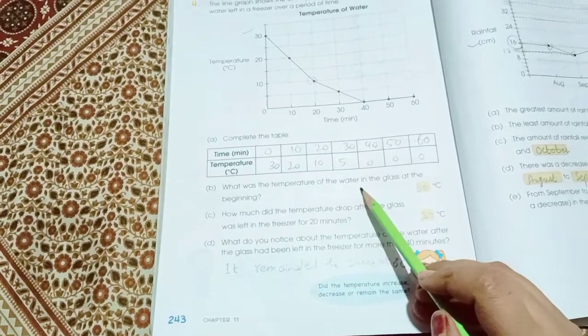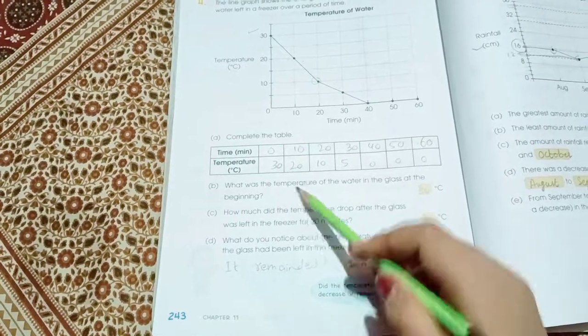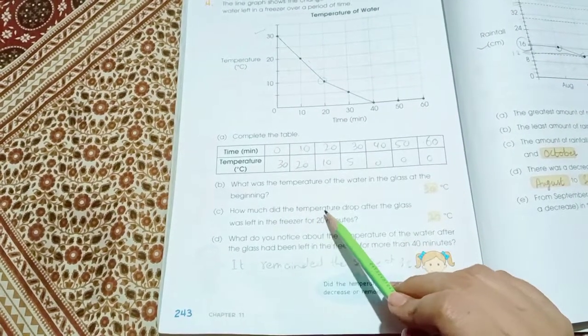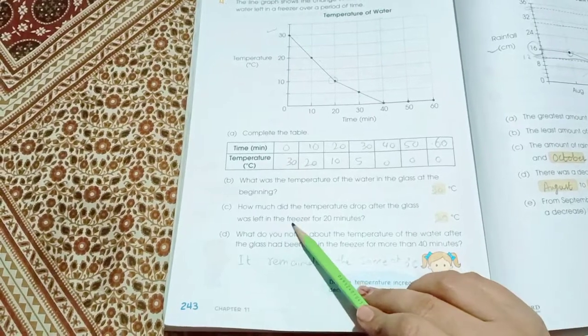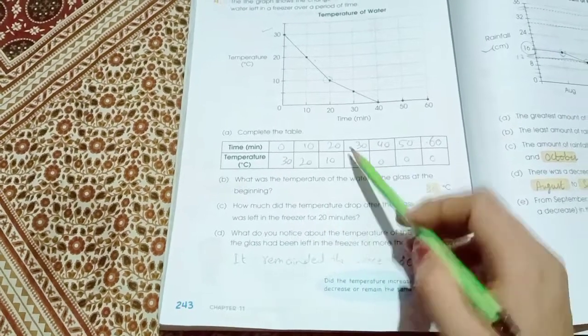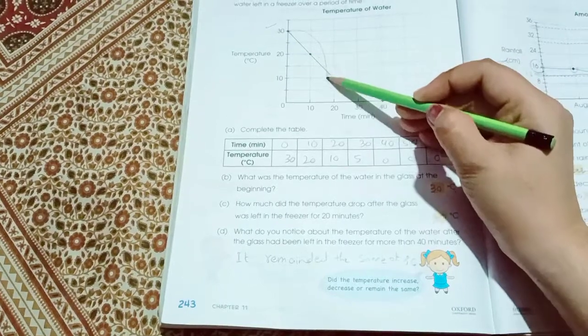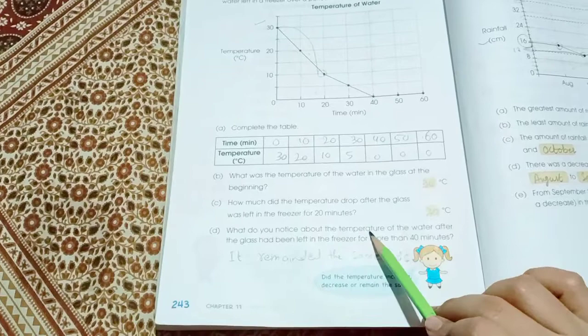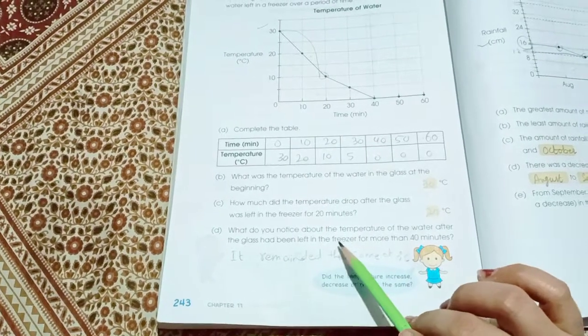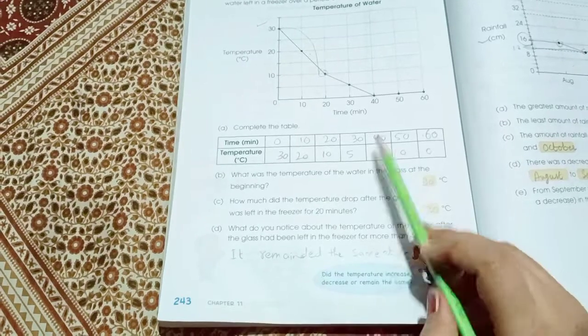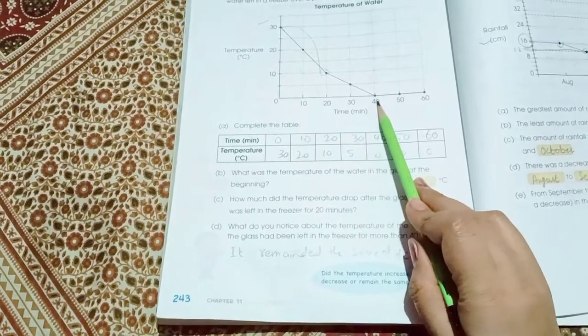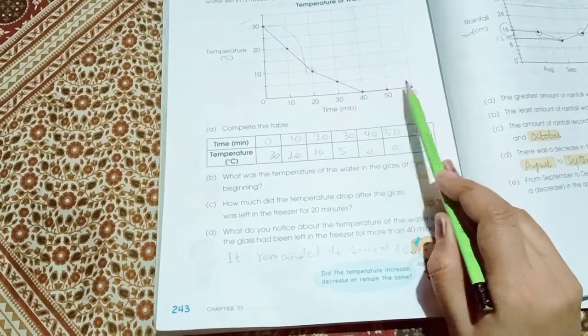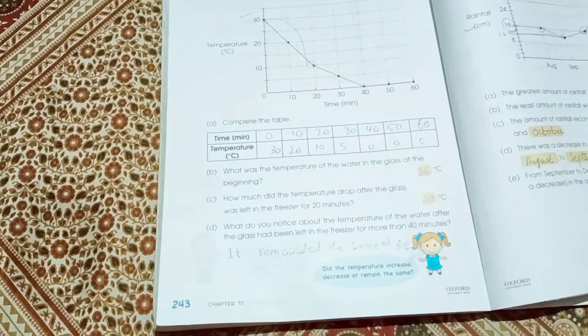What was the temperature of the water in the glass at the beginning? So the temperature is 30. How did the temperature drop after the glass was left in the freezer for 20 minutes? So the temperature left to 20 minutes, 20 degrees. What do you notice about the temperature of the water after the glass had left in the freezer for more than 40 minutes? So when the glass left for more than 40 minutes, it remained the same 0 degree. 40, 0, 50, 0 and 60, 0.